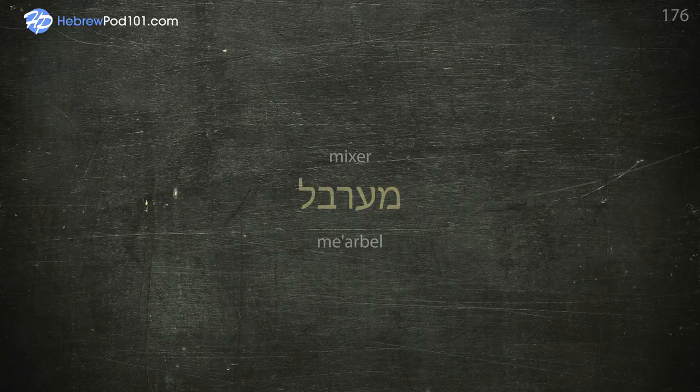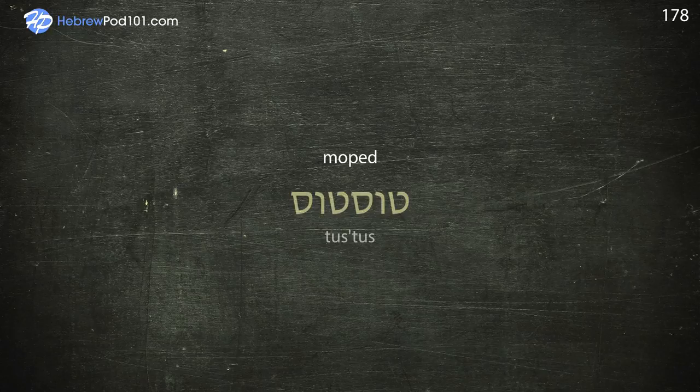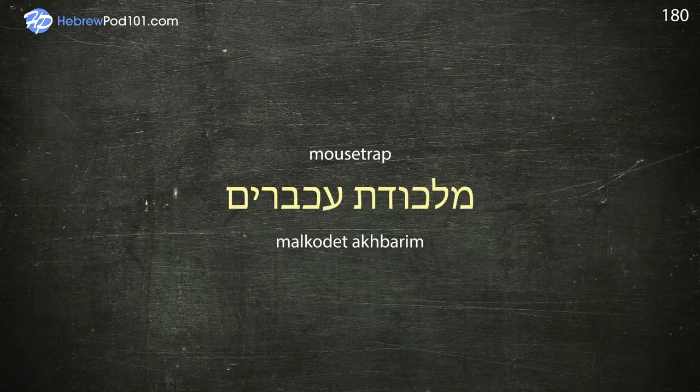Moped — Tustus. Mosquito net. Mousetrap — Malkod et Akhbarim. Move — Avar.